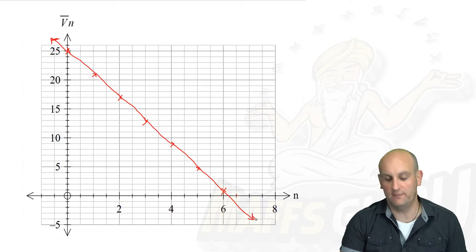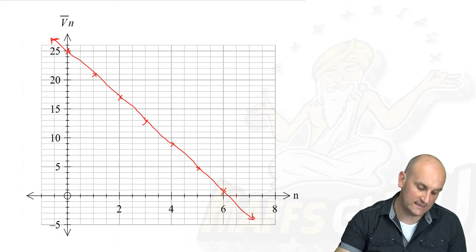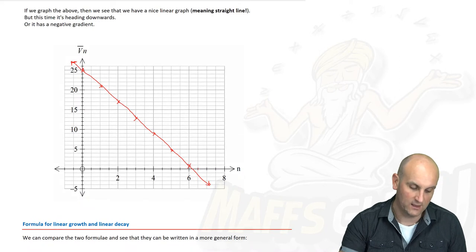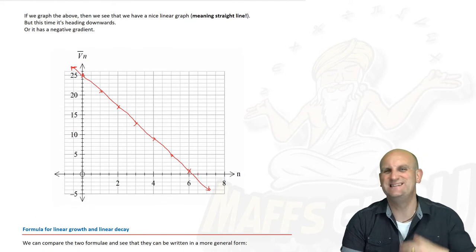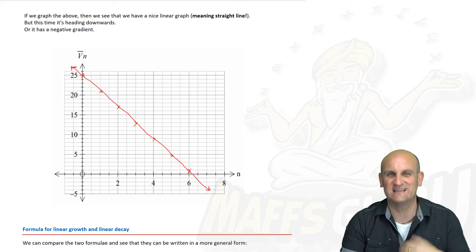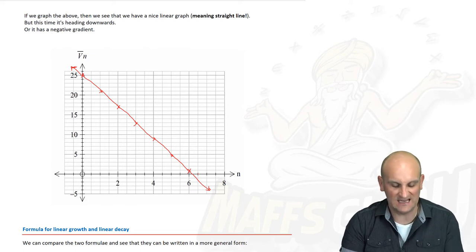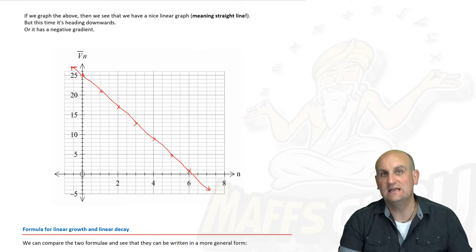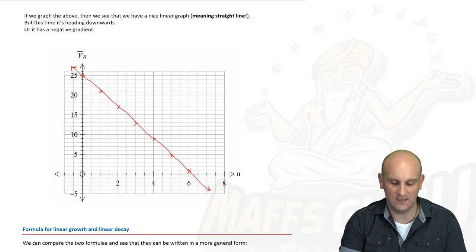And what do we notice? Well, it's the linear relationship and but this time it is decaying. Oh, isn't that awful? I hate that thing. Yes, so it's got a downwards trend. It's heading downwards. It has a negative gradient. As n is increasing, V of n is decreasing. All of these are important, but it is decaying. It is actually going down.